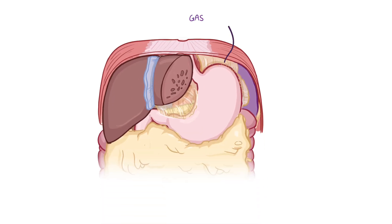There is also the gastrophrenic ligament, which connects the stomach to the diaphragm, and the phrenicocolic ligament, which is located at the left colic flexure and attaches to the diaphragm.